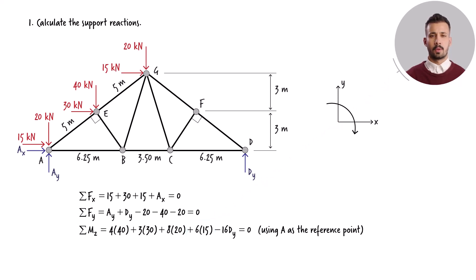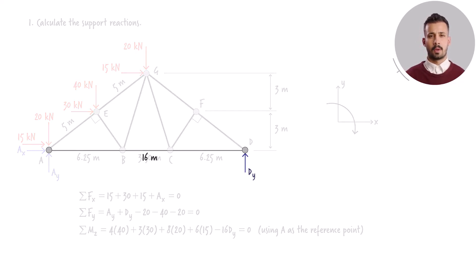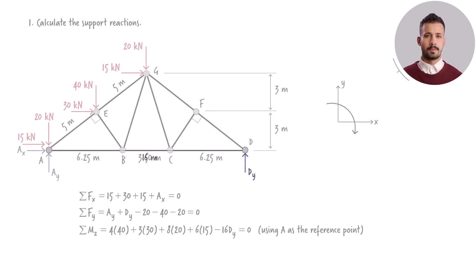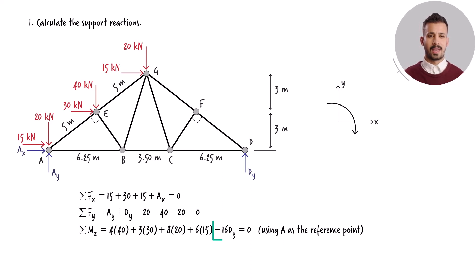The reaction force at point D generates a counterclockwise moment at point A, given that the moment arm for this force is 16 m. We get negative 16 times dy here.